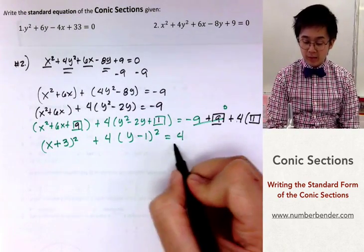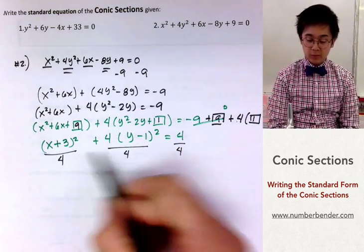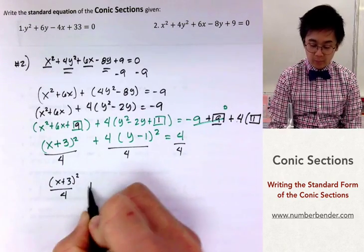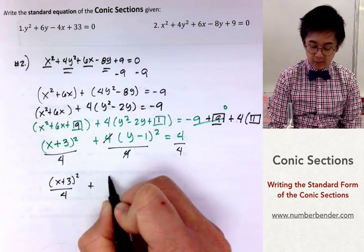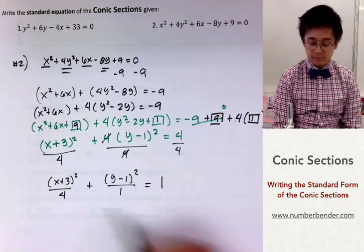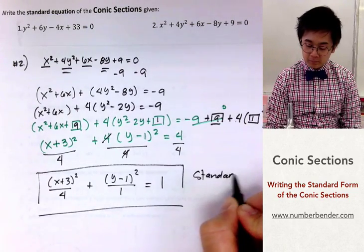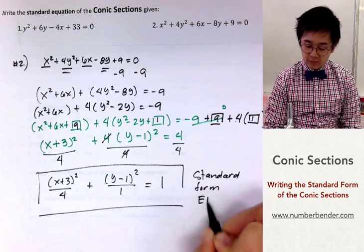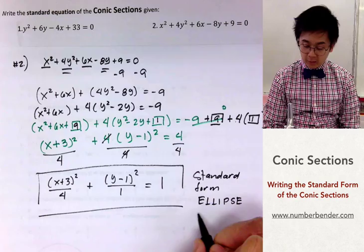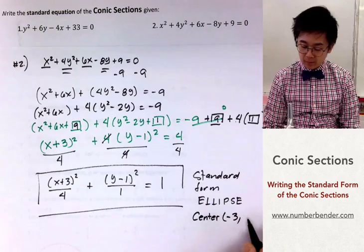All we have to do now is to divide each term by 4. By doing so we'll have x plus 3 squared all over 4 plus y minus 1 squared all over 1 equals 1. So now we have the standard form of an ellipse. And in this standard form we can also find the center which is at negative 3 and positive 1.